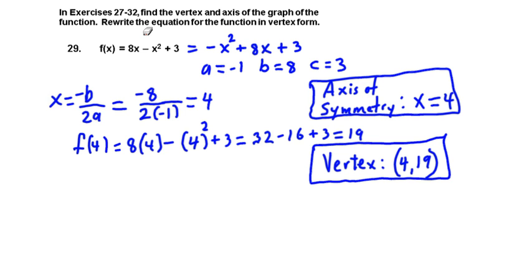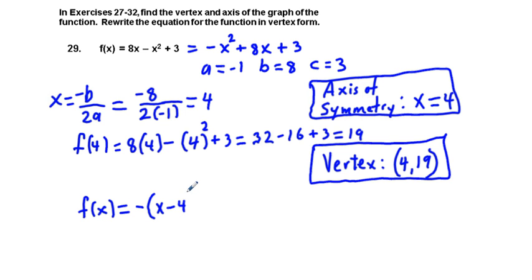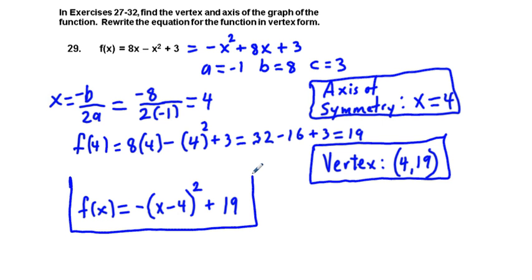We have our boxed-in answers: axis of symmetry x equals 4, and vertex at the point 4 comma 19. Now we're going to finish up with the function in vertex form: f of x equals negative 1 times the quantity x minus 4, squared, plus 19. This one should be easier than problem 27 in that we didn't go into fractions, so this one is probably simpler for a lot of students.